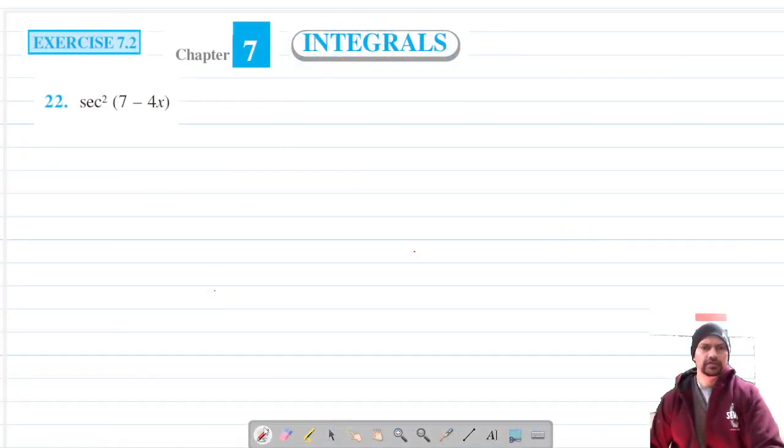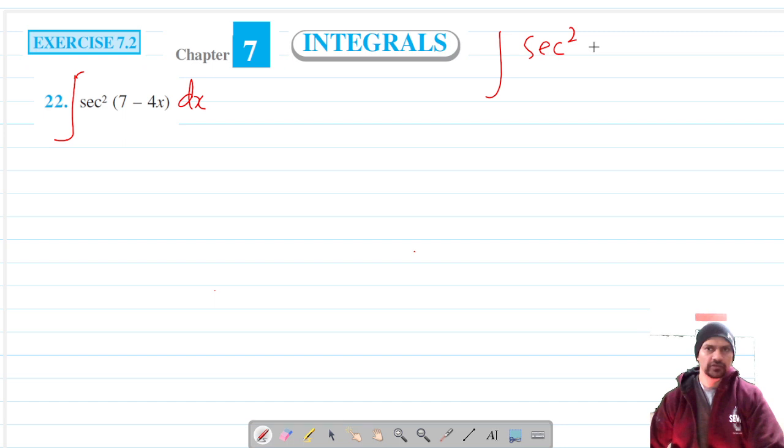Alright, so for question number 42 of exercise 7.2, we have to integrate sec square 7 minus 4x into dx. We know that integration of sec square x into dx is tan x plus c, so this is tan 7 minus 4x.